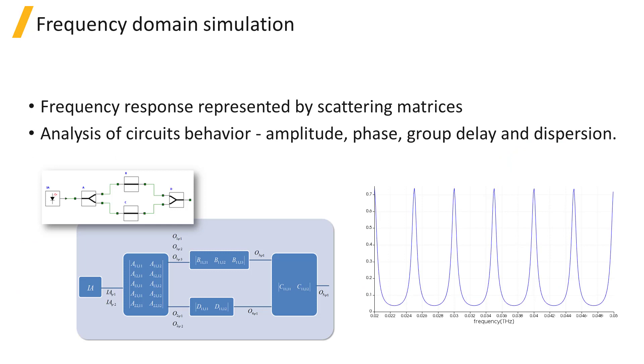The frequency domain solver in InterConnect can be used to calculate the overall frequency domain response of the circuit. This is done by solving a sparse matrix that represents the circuit as connected scattering matrices, each one representing the frequency response of an individual element.